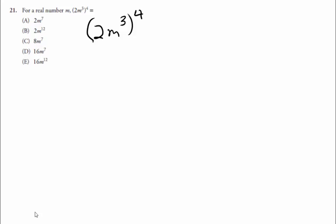They distribute over multiplication. When an exponential term is taken to another exponent, you multiply the exponents to simplify the expression.